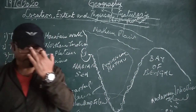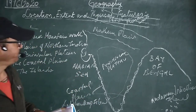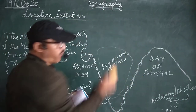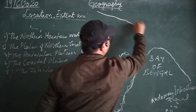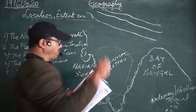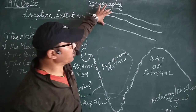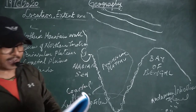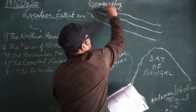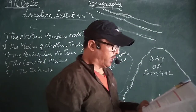Now I will explain the Northern Mountain Wall. The Northern Mountain Wall is known as the Himalayan Ranges. The Himalayas consist of three parallel ranges.